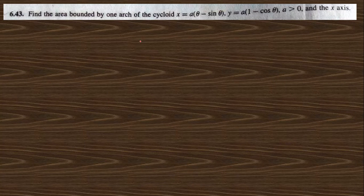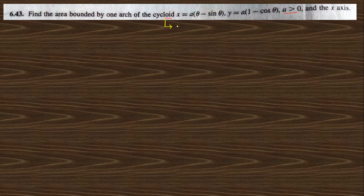The question says: find the area bounded by one arc of the cycloid whose parametric equation is x = a(θ − sin θ) and y = a(1 − cos θ), where a > 0, and the positive x-axis. First, we need to know about the cycloid. A cycloid is the path traced due to the rotation of a circle on a line.